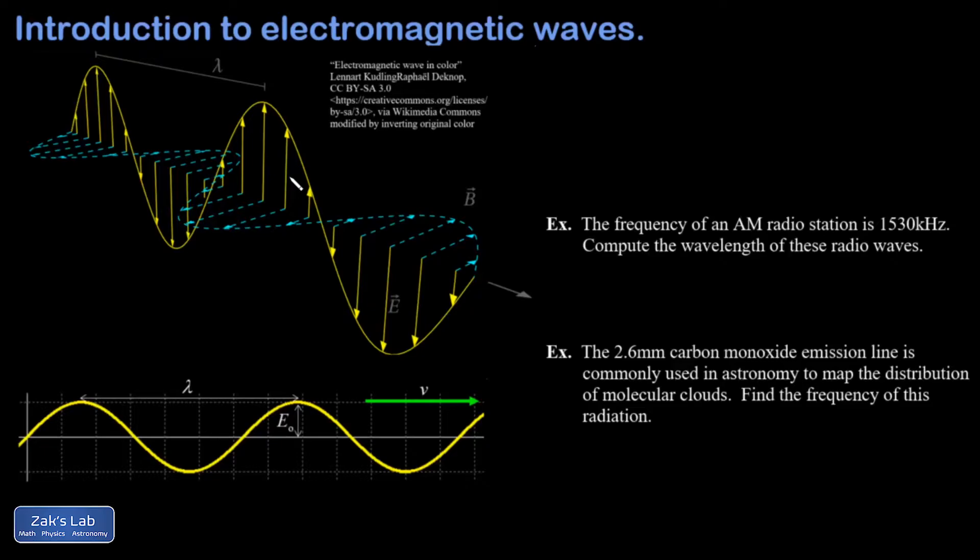A second big point is that the speed of an electromagnetic wave is a universal constant of nature, and it's about 3 times 10 to the 8th meters per second. This is true for all wavelengths and consequently all frequencies of electromagnetic radiation.